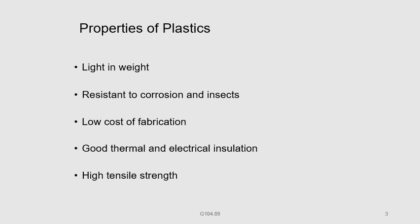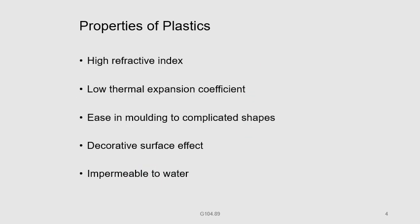The properties of plastics, which we already discussed in the last video lesson — just a revision. Plastics are light in weight, resistant to corrosion and insects, low cost of fabrication, good thermal and electrical insulation, and high tensile strength. Plastics also have a high refractive index, low thermal expansion coefficient, and ease in moulding to complicated shapes.